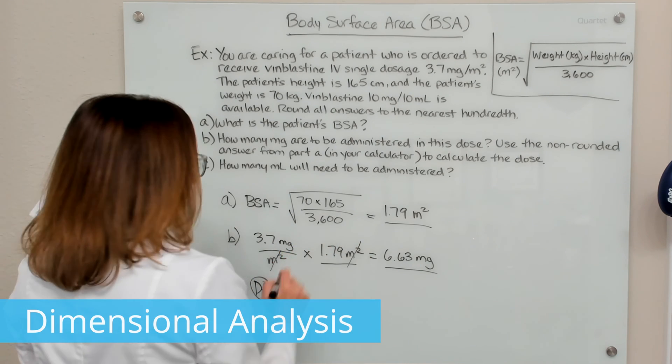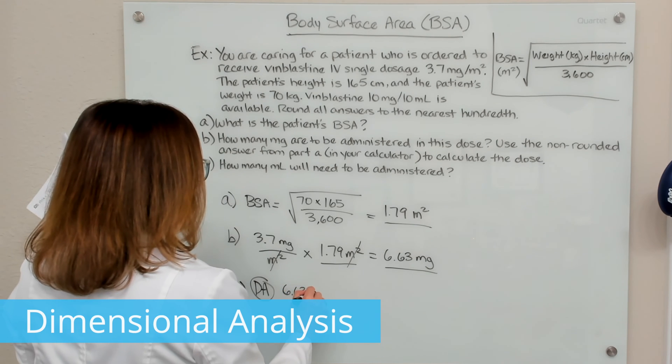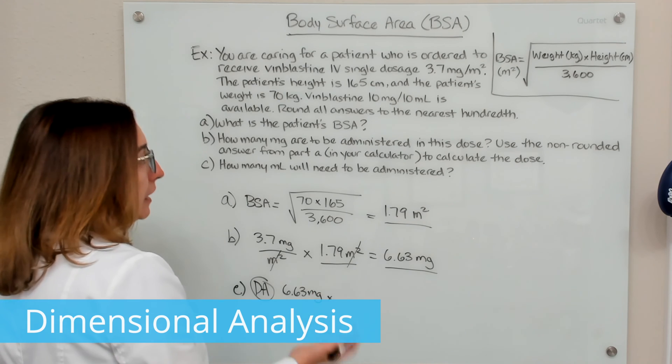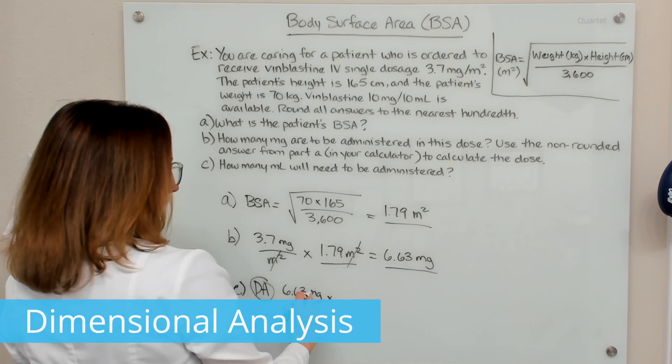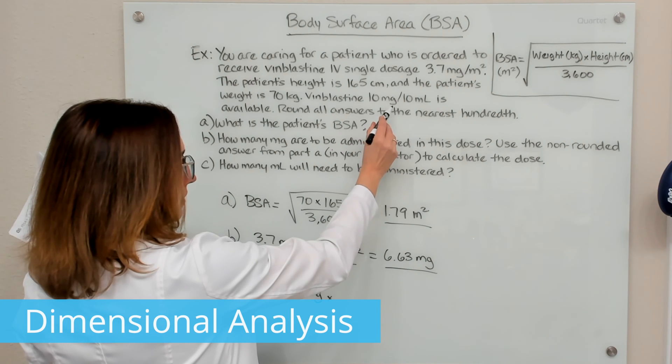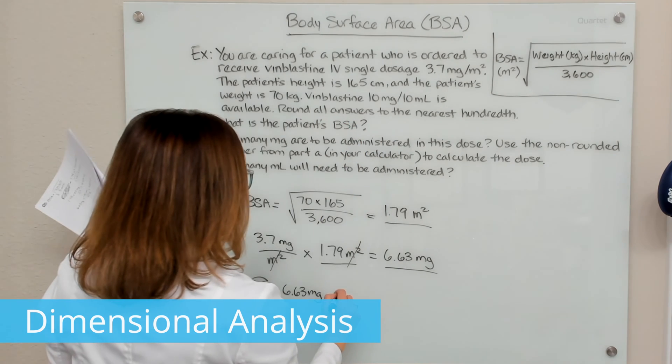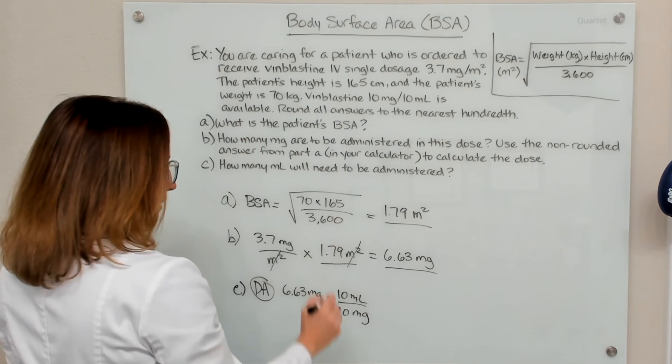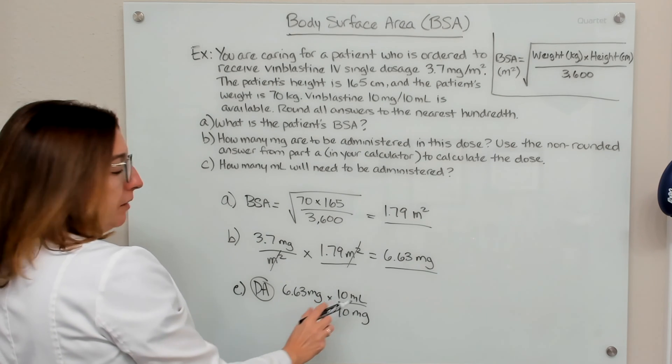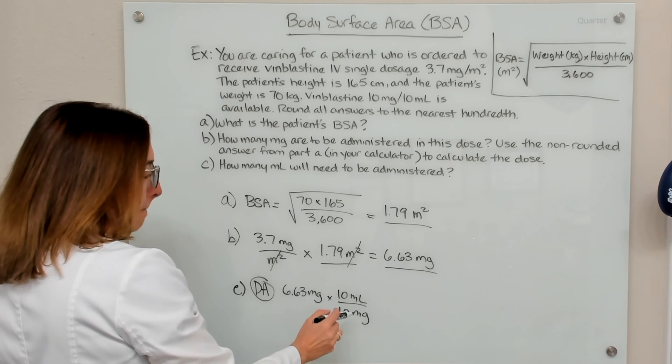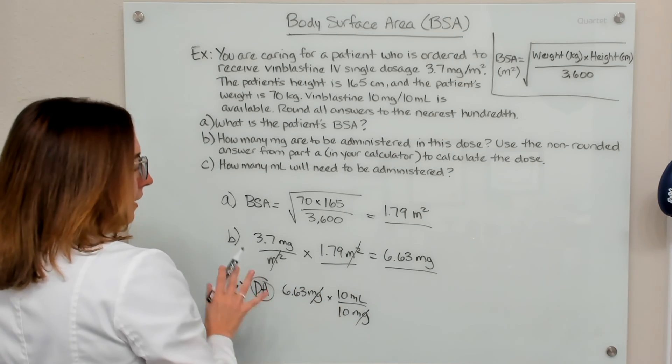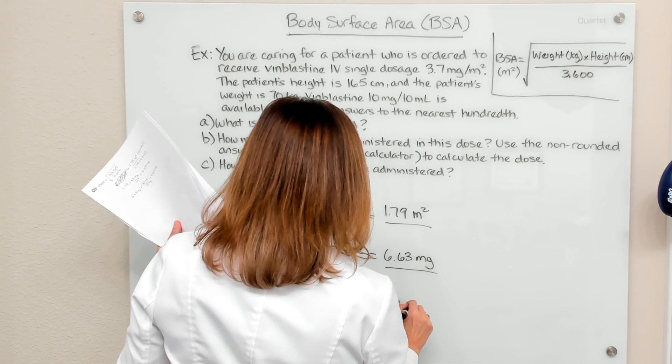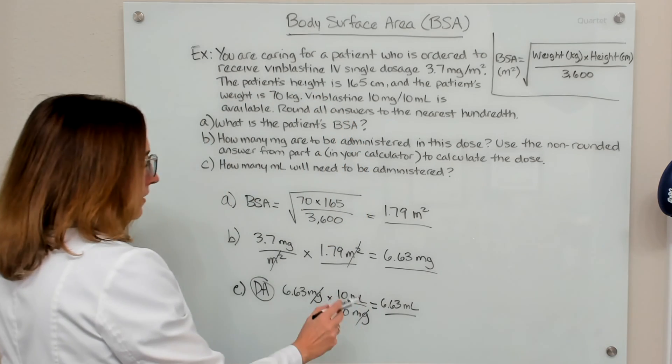So we need to give 6.63 milligrams to our patient. And we can figure out the amount of milliliters to administer by multiplying this amount by the available concentration of vinblastine. So if we multiply by 10 milliliters over 10 milligrams, which is the concentration, I was careful to put milliliters on top and milligrams on bottom, such that my milligrams cross off. And if I calculate that out, I end up with 6.63 milliliters. And that's how many milliliters I would need to administer.